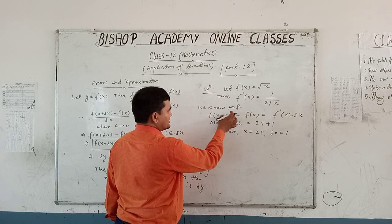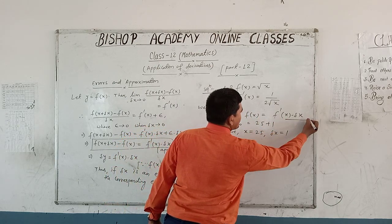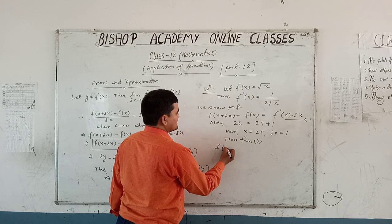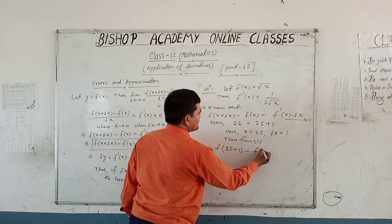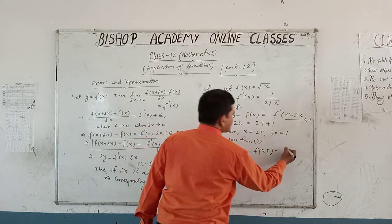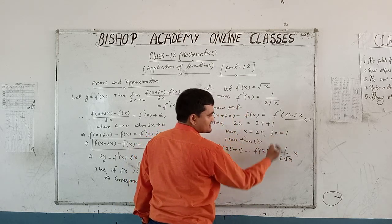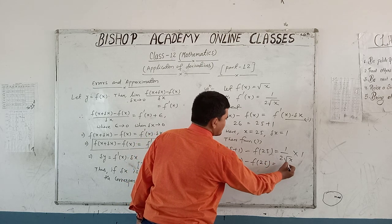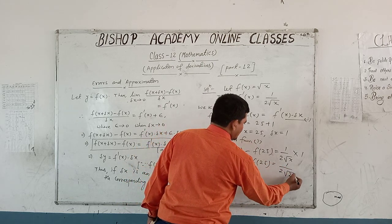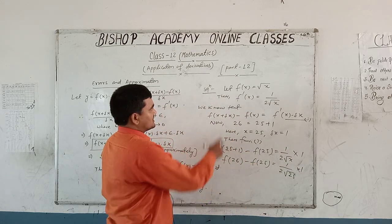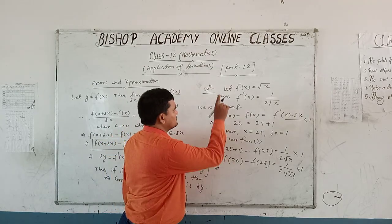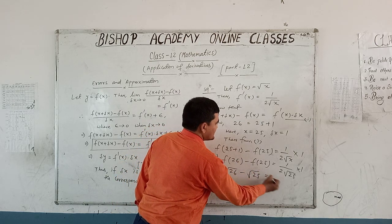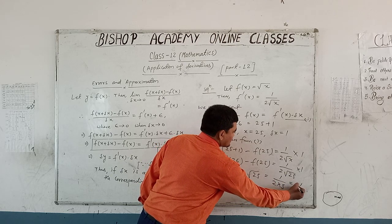Putting these values into the expression, we get f(25 + 1) minus f(25) equals f'(x) into delta x, which is 1 upon 2 root x into 1. Since x equals 25, root x equals 5. So this equals 1 upon 2 into 5, which equals 1 upon 10.